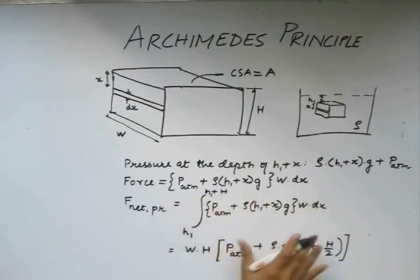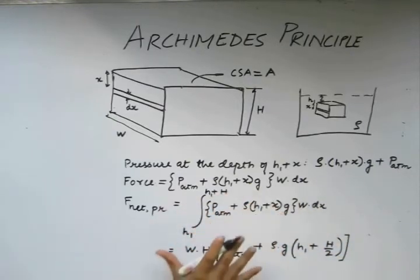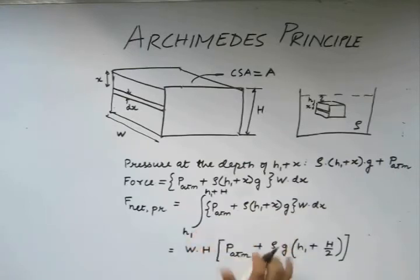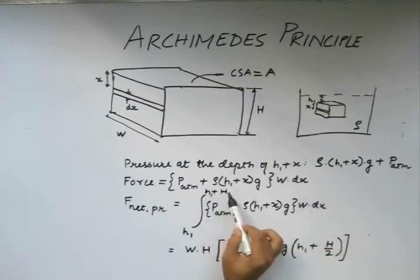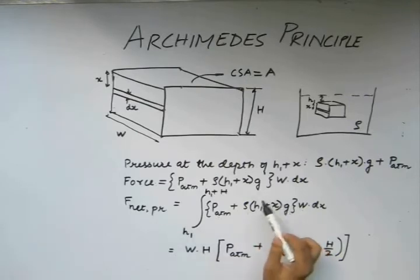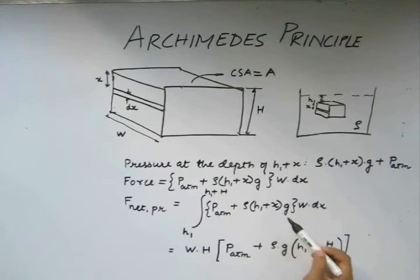This integral being very trivial is not solved in detail here. But if you integrate, we can directly see that P_atm times W dx will be converted to (h1 plus H minus h1), which is going to be W times H. This quantity gets converted to h1 times g times W. Because there is nothing outside, we have only capital H. This x gets converted to H² which on solving gives us this.